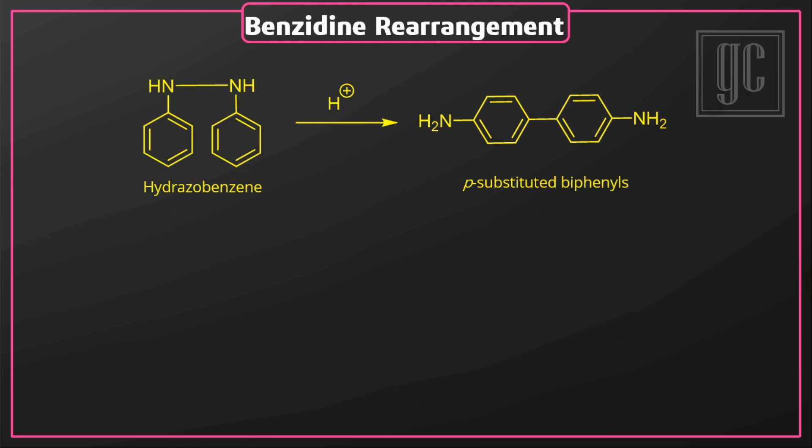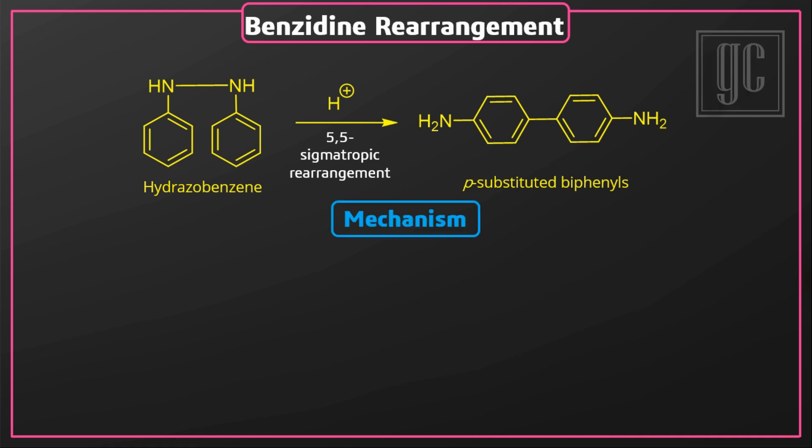In this rearrangement, a [5,5]-sigmatropic rearrangement takes place. The driving force for this rearrangement is to form a more stable rearranged product. We are now going to discuss the mechanism of this rearrangement.